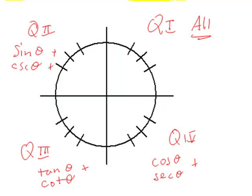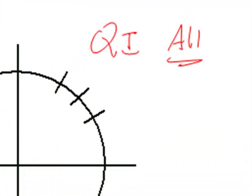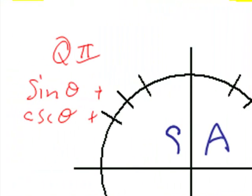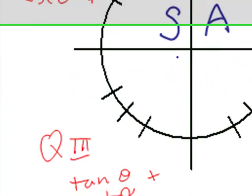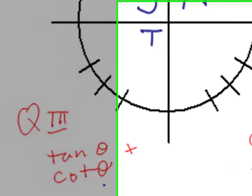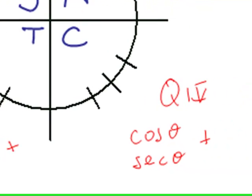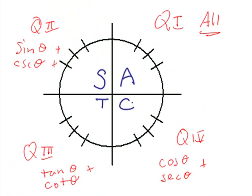Sometimes we use this helpful device to remind us. We might say that all are positive in the first quadrant. Sine, and I use sine to represent both sine and cosecant, are positive in the second quadrant. Tangent is positive in the third quadrant, and cotangent too. And cosine and secant are positive in the fourth quadrant. Very important information, and you should know that.